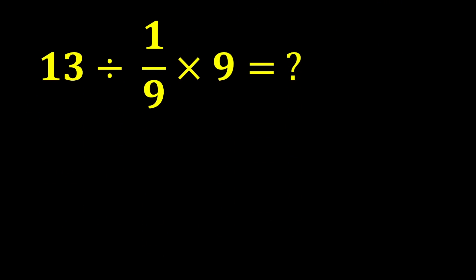13 divided by 1 over 9 multiplied by 9. In this expression, there is both division and multiplication. If we move from left to right, we reach division first. So first, we perform 13 divided by 1 over 9.